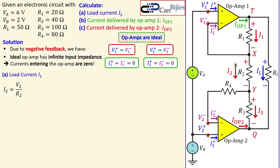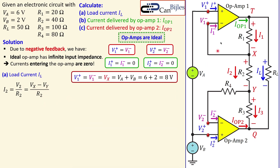I recognize that I2 is the voltage across resistor R2 divided by its resistance, which is (Vx - Vy) / R2. What is Vx? V1- equals V1+, and V1- is directly connected to node X. I also see that V1- is at a node that is a series combination of Va and Vb — that is six plus two equals eight volts. Therefore, node X is at eight volts.